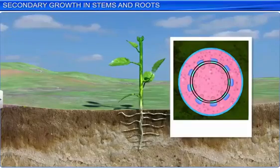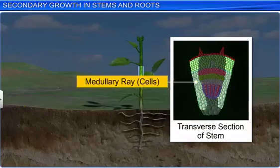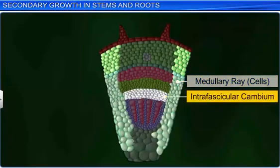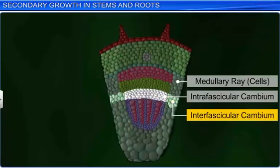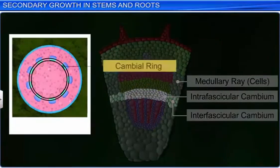When the secondary growth of a stem begins, a process of differentiation takes place in the cells of the medullary rays. These cells, located next to the intrafascicular cambium, become meristematic in nature and lead to the formation of the interfascicular cambium. Thus, the fusion of intrafascicular cambium and the interfascicular cambium results in the formation of a continuous ring of cambium, or the cambial ring.